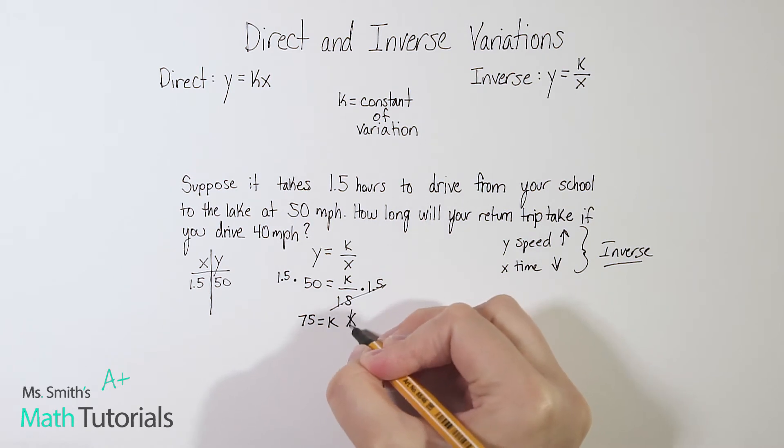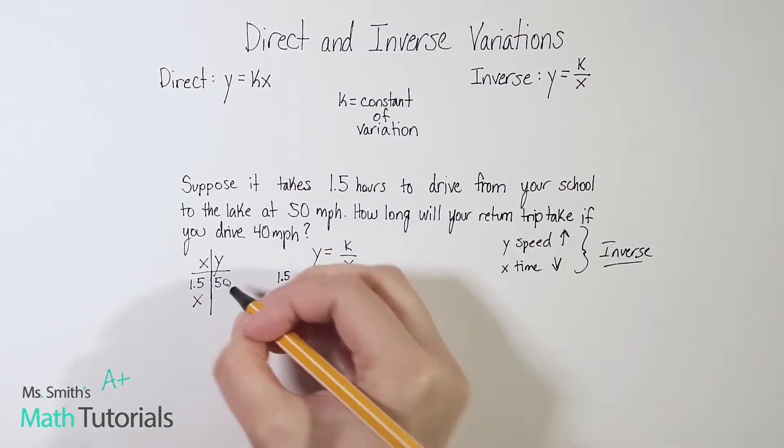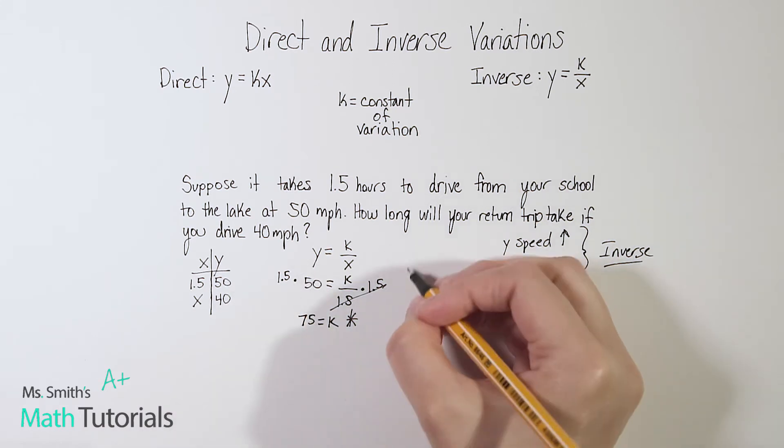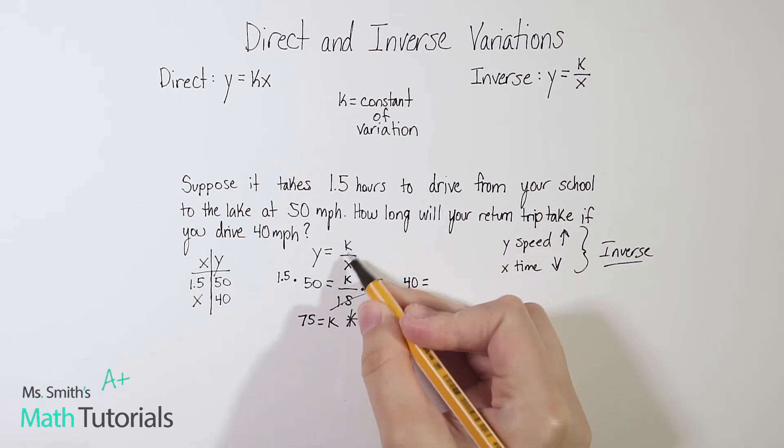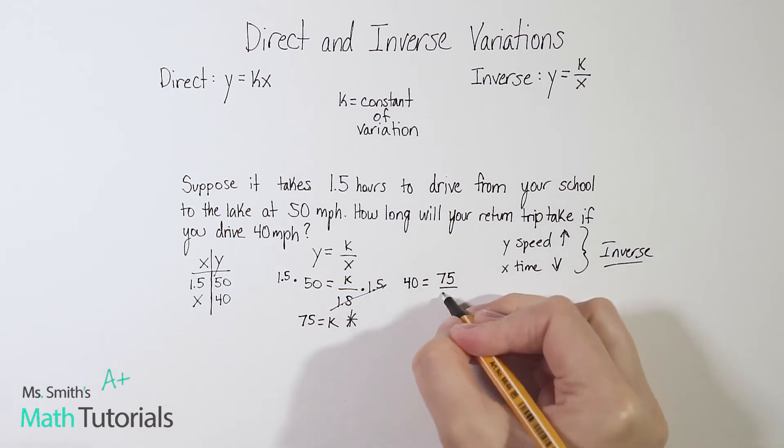Because I want to know how long x time, how long will your return trip take if you drive 40 miles per hour. So I got to do the same process again, only this time, instead of solving for k, I already know k, I'm going to solve for x. So my y is 40 equals k, which I already found out, 75, that's why we need to know that k, so that I can figure out x.